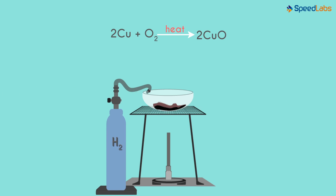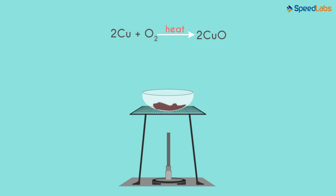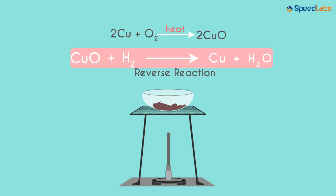Now if we pass hydrogen gas over this heated material, the black coating turns brown. Amazing, isn't it? What's the chemical reaction that takes place? It's this one — a reverse reaction in which copper is obtained back, and hence the black coating turns brown again.